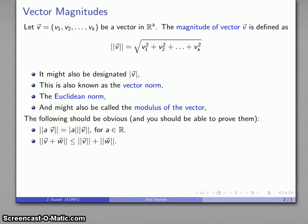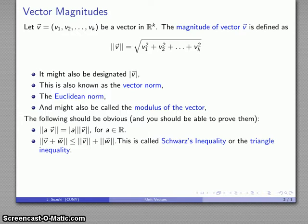Likewise, somewhat less obviously, we have the following. If I have two vectors and I consider the magnitude of the sum of the two vectors, that should be less than or equal to the individual magnitudes summed together. This is sometimes known as Schwartz's inequality or the triangle inequality.